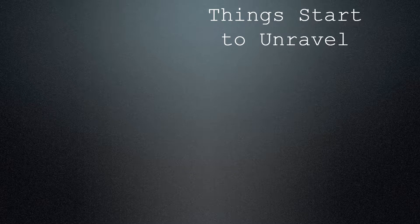Hey guys, it's Ms. Tegolian. I have your slide of notes on the unraveling of Reconstruction. This slide is called 'Things Start to Unravel,' and I'm going to talk about how Reconstruction starts to end with the election of Rutherford B. Hayes. You should take notes, and we will have a quiz on this slide when class starts. Next class, you can use whatever notes you have taken to help you. So let's get started.